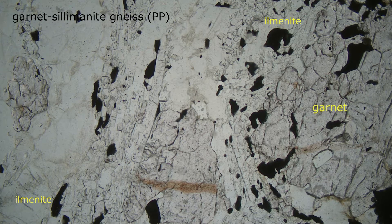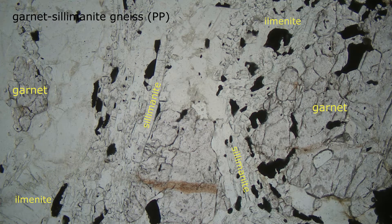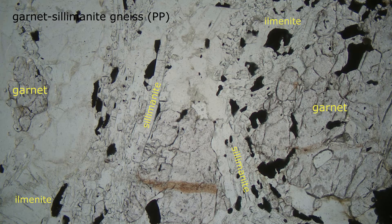The blocky, high-relief grains with many fractures are garnet. And the long needle-like grains are sillimanite. In some places we see end views of sillimanite needles and they appear as small squares or rectangles.